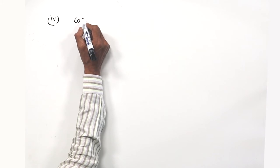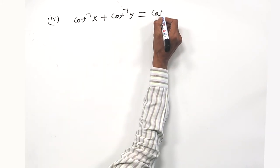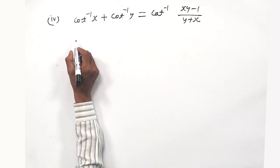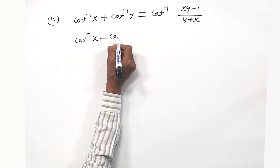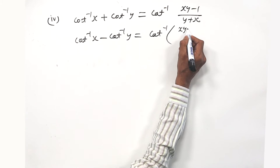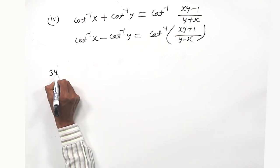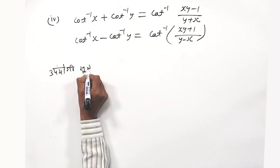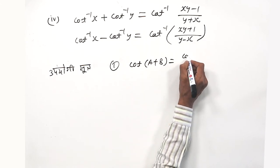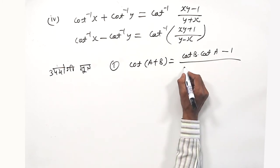This is in the form of yog gundh dharma (addition property): cot⁻¹x + cot⁻¹y = cot⁻¹ of (xy − 1)/(y + x). Similarly, cot⁻¹x − cot⁻¹y = cot⁻¹ of (xy + 1)/(y − x). To prove these, remember: cot(A+B) = (cot B · cot A − 1)/(cot B + cot A).